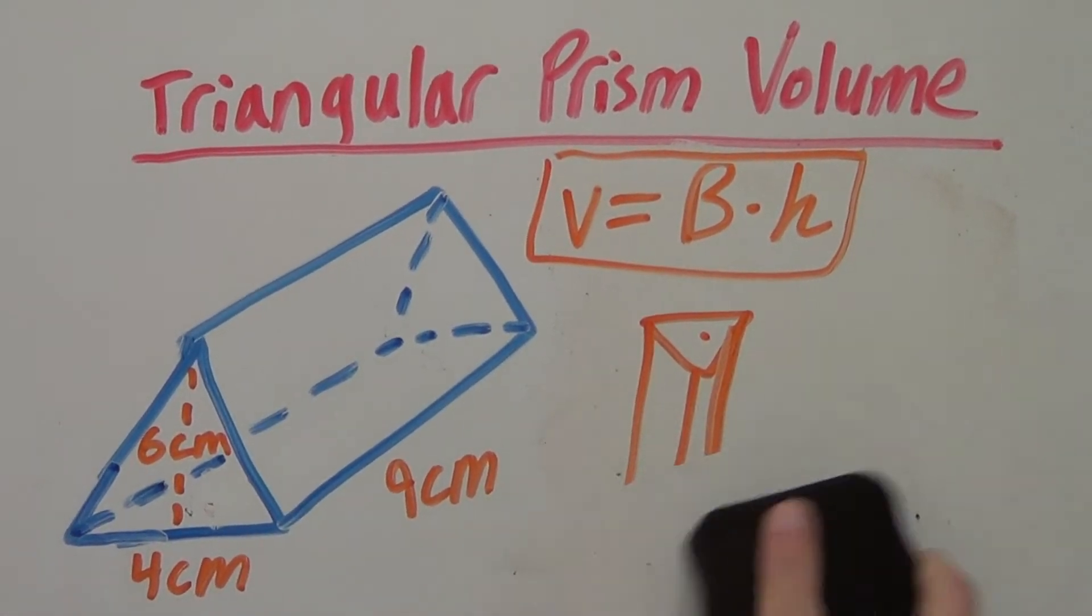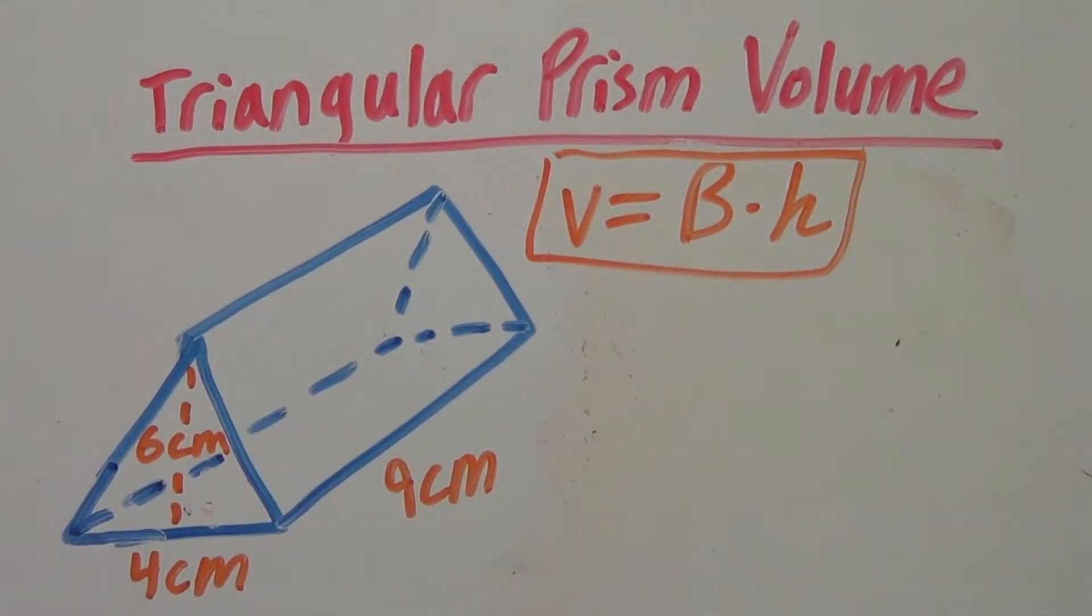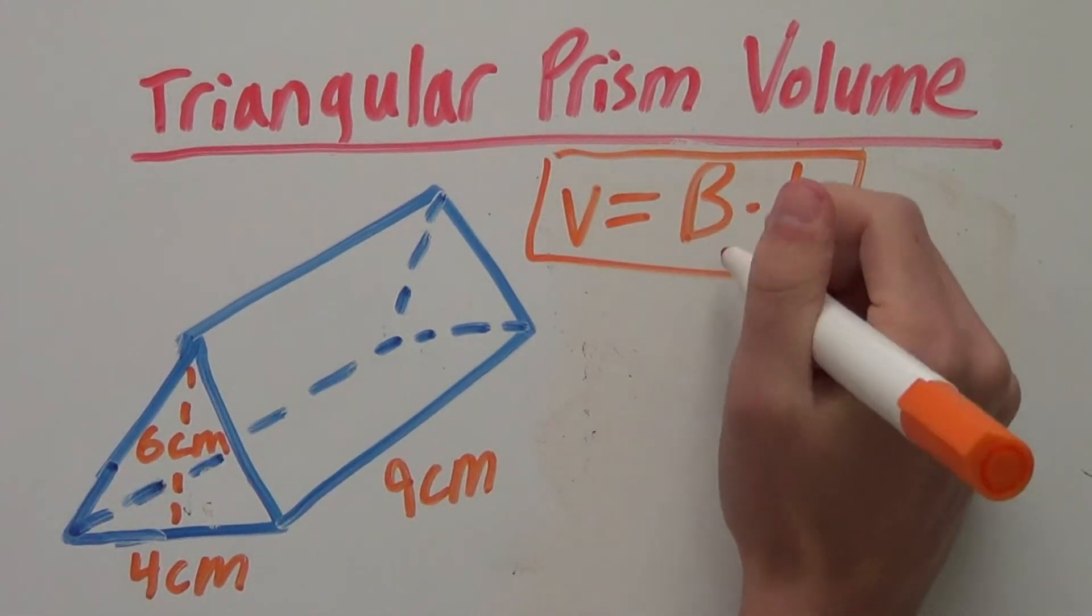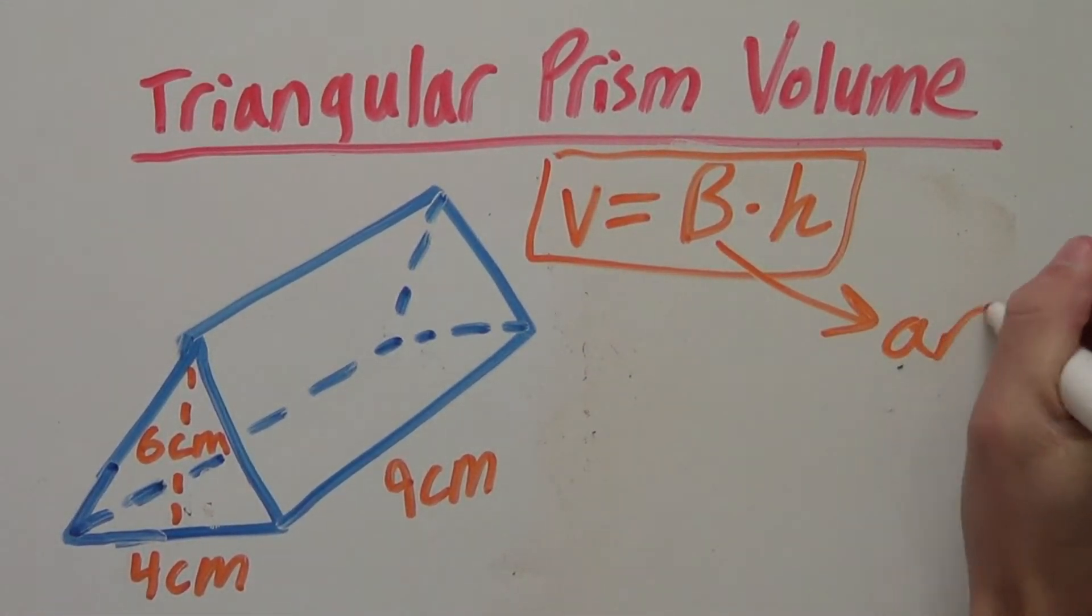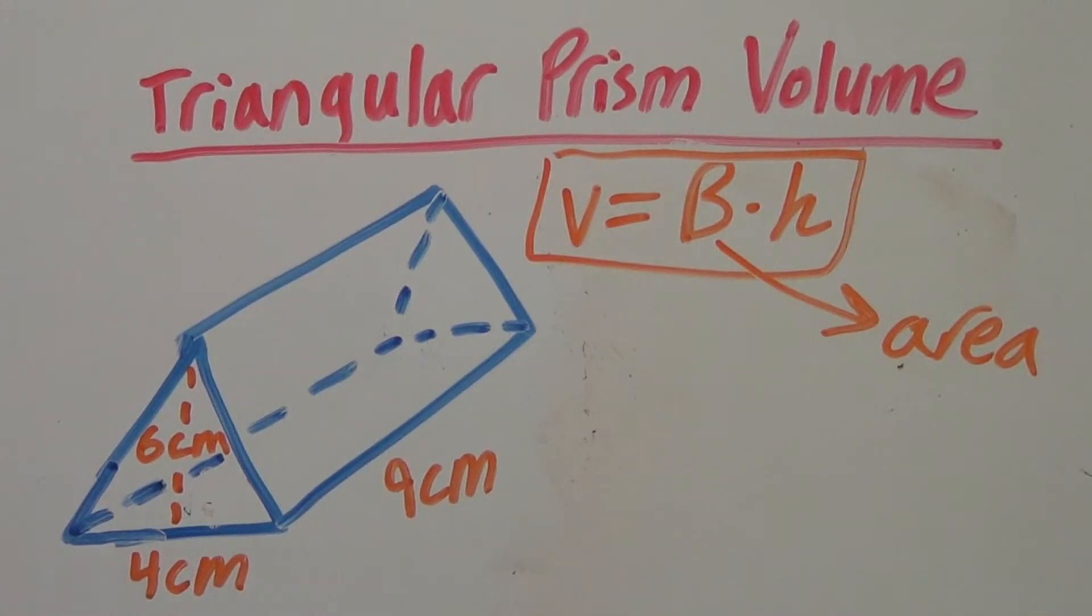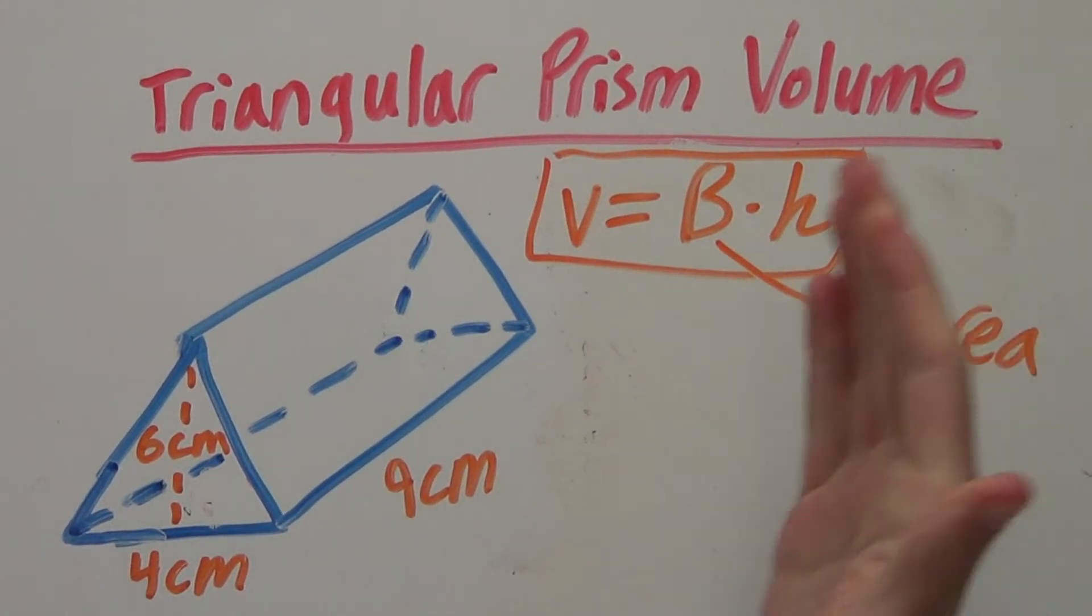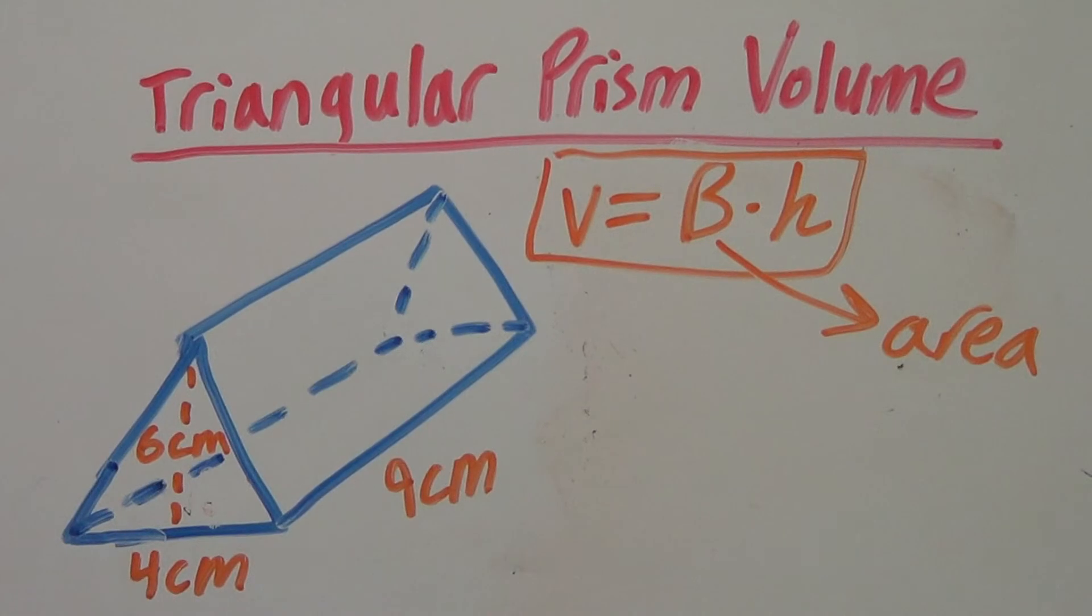The second important thing to know about this formula is that the base is the area of that base times the height to get the total volume. So now that we got all that out of the way, let's solve this problem here.